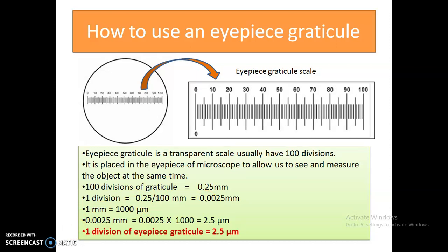The images we observe through the microscope will be very minute, and the correct unit to measure them is the micrometer. So we need to convert this value from millimeters into micrometers. Since one millimeter equals 1000 micrometers, multiplying 0.0025 by 1000 gives us 2.5 micrometers. Therefore, one division of this eyepiece graticule is equal to 2.5 micrometers.